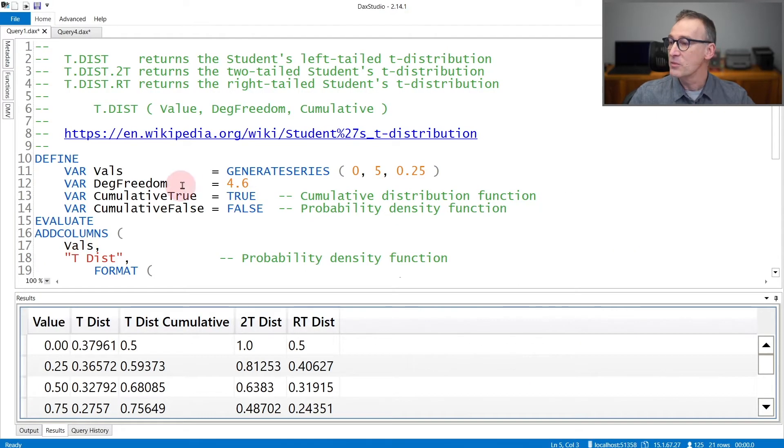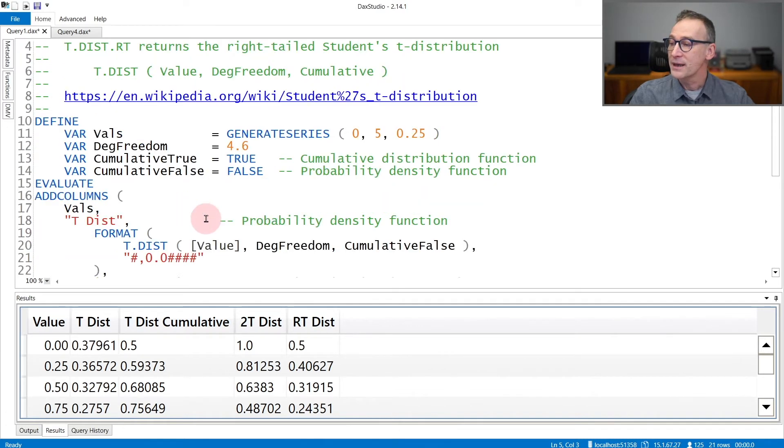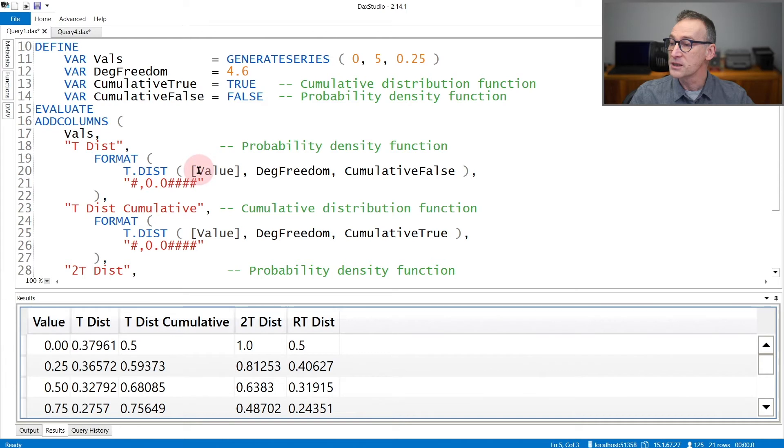In the example, I generate a set of values from 0 to 5 with a step of 0.25, I use a fixed value for the degree of freedom, and then I compute the Student's t-distribution for that value. So for 0.50, the t-distribution is 0.32792.